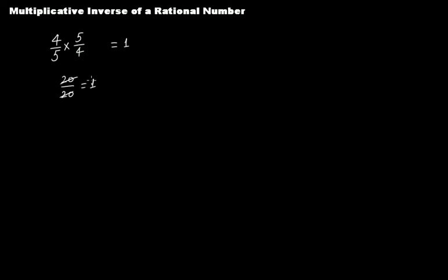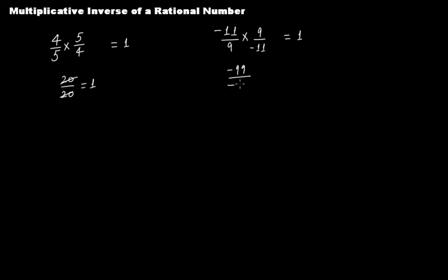The same thing applies to any rational number. Let's say we now have minus 11 over 9. If I ask you what number should I multiply this with so that you get the product as 1, you will instantly say 9 over minus 11. If you do this you get minus 99 over minus 99, which gives you 1, because negative with negative gets cancelled.